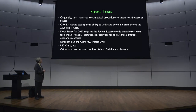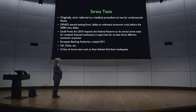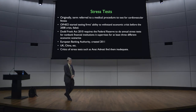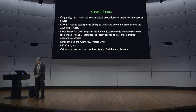The Dodd-Frank Act in the United States of 2010 requires the Federal Reserve to do annual financial stress tests for non-bank financial institutions it supervises, with at least three different economic scenarios. What they do is gather information from the firm about all of their interconnectedness with other institutions and everything they own.